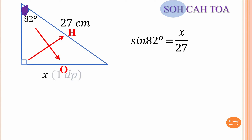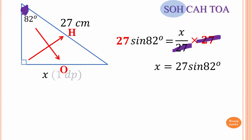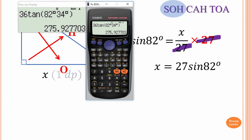Now we want to solve for x. We get rid of 27 by multiplying both sides by 27. So we times 27 on the right to cancel it, and times 27 on the left as well. This cancels out, so therefore x = 27 sin(82°).